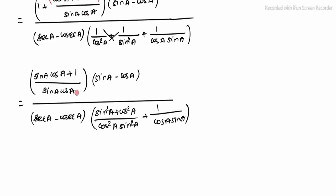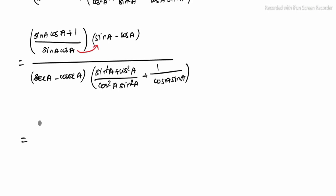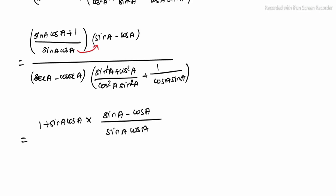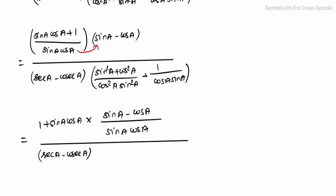Rewriting the full expression: numerator is (1 + sin A · cos A)(sin A minus cos A) divided by sin A · cos A. The whole is divided by (sec A minus cosec A) into the factor with 1 over cos²A · sin²A plus 1 over cos A · sin A.